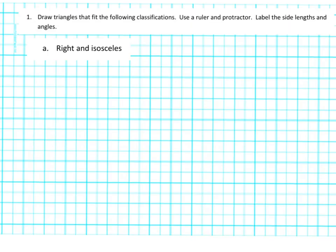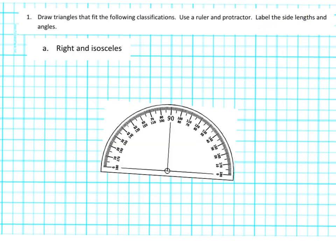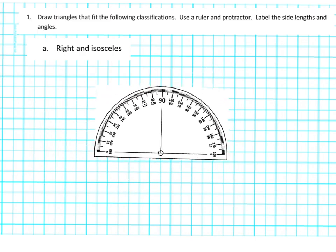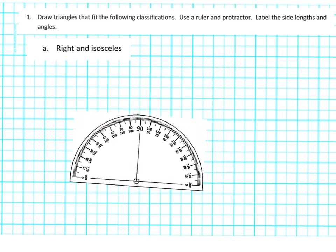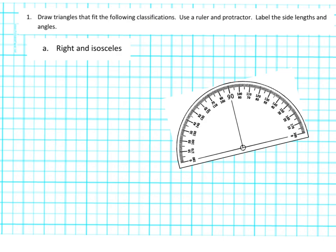In this slide, we're told to draw triangles that fit the following classification, then use a ruler and protractor to make it as precise as we can, and then label the side lengths and angles. First, we're supposed to draw a right triangle that is also isosceles — so it's right and isosceles.